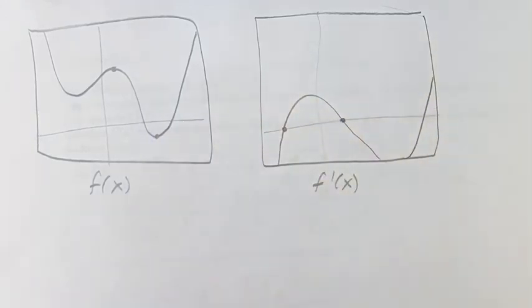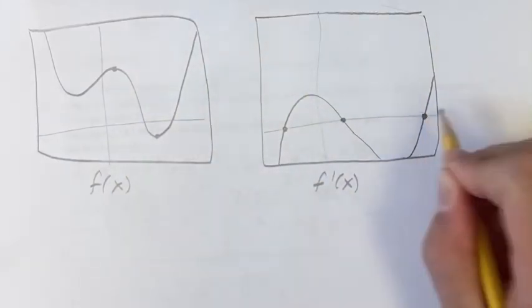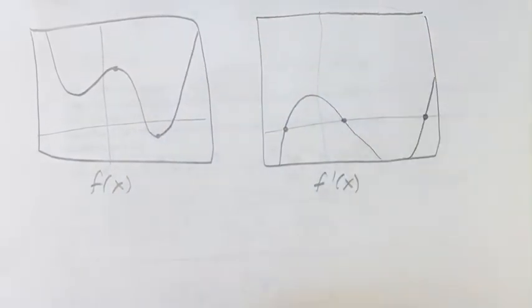Hitting zero once again, or sorry, going from decreasing to increasing once again, so the value is zero again. And increasing, it's above the x-axis.